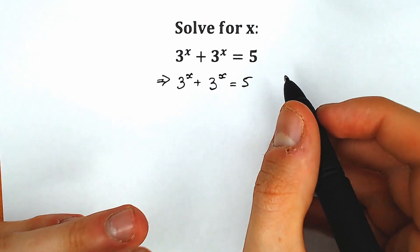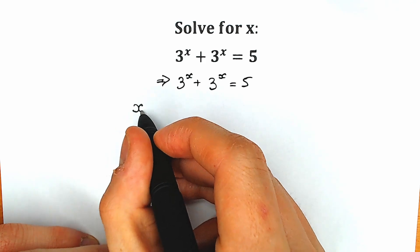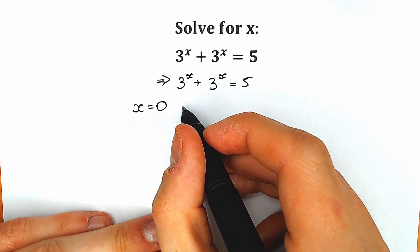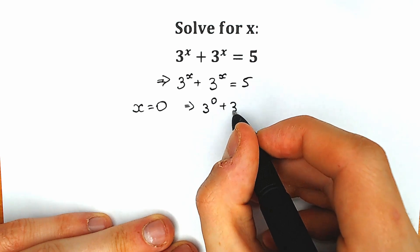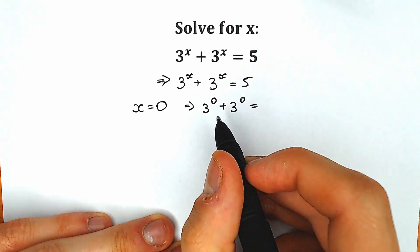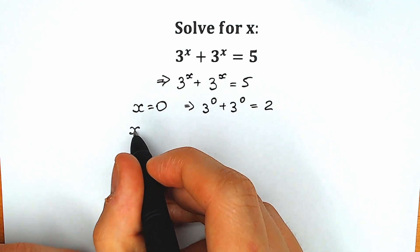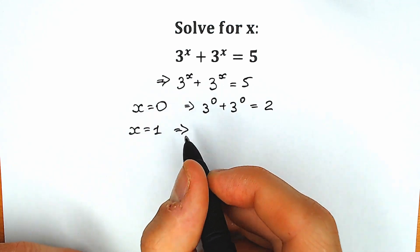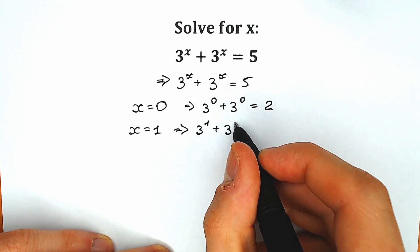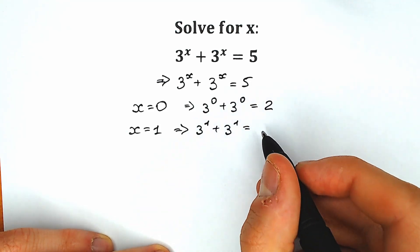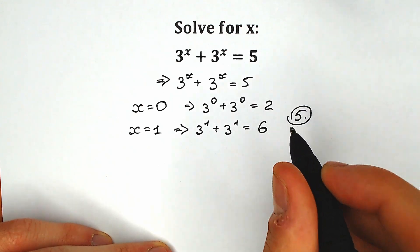Right now, let's check by inspection real quick. Maybe we are lucky. For example, x equal to 0. So we have 3 to the power 0 plus 3 to the power 0. We need this to equal 5, but in our case we have 1 plus 1 equal to 2. Maybe x equal to 1 is a root. So we have 3 to the power 1 plus 3 to the power 1 equal to 3 plus 3 equal to 6. So as you can see, it's not 5. We really need 5, but we have 2 and we have 6.